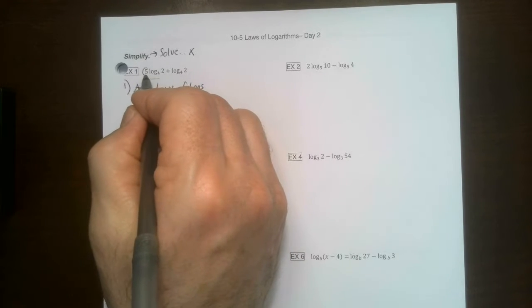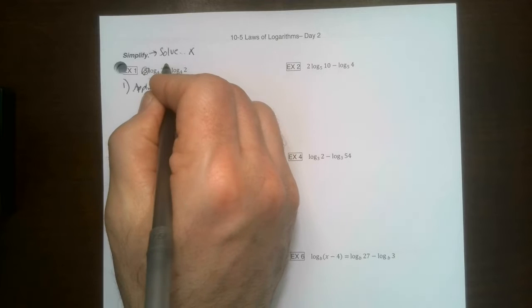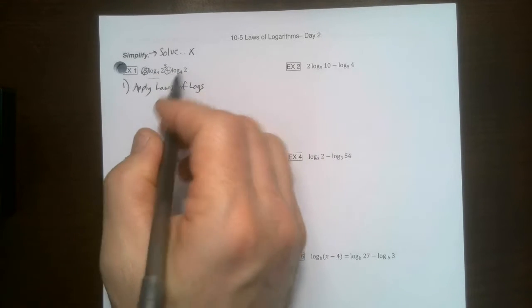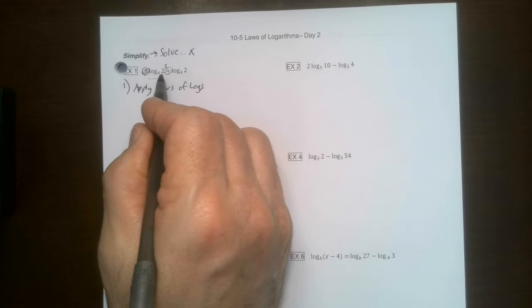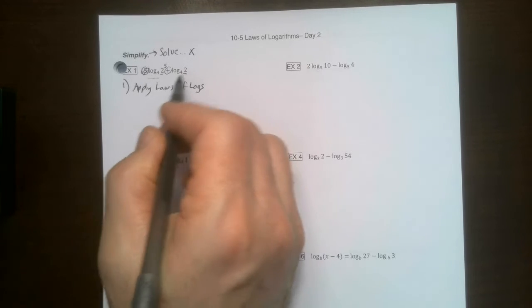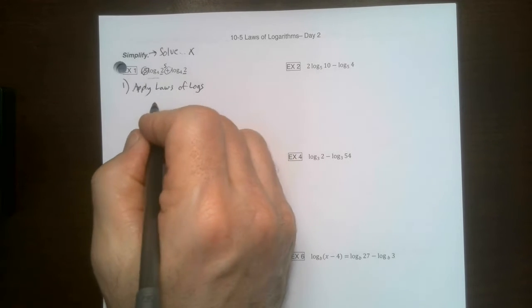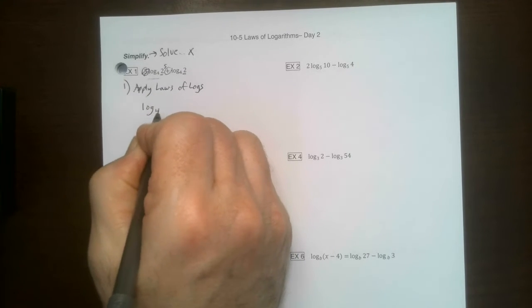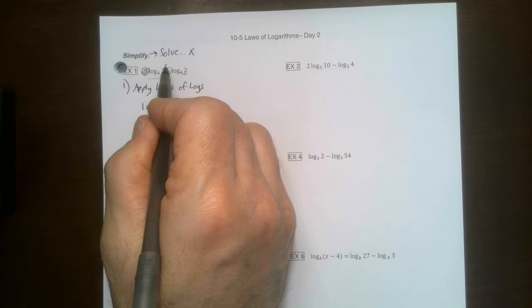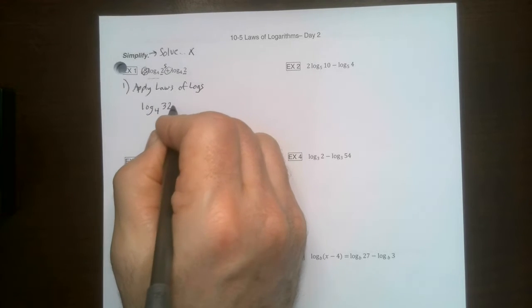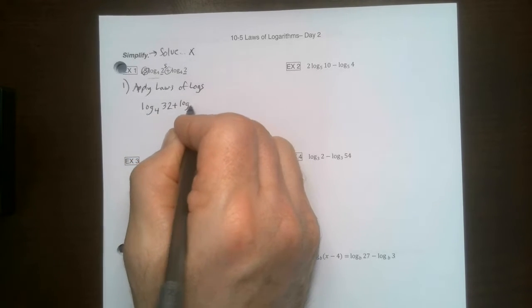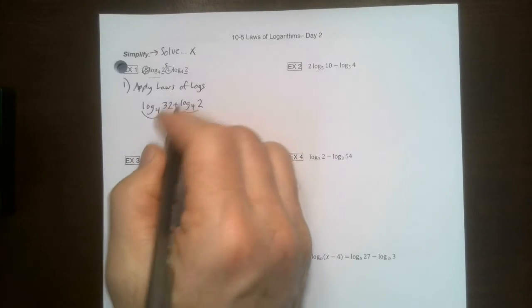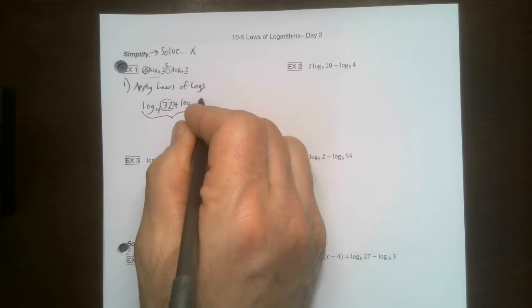So remember, this is the law of three. So we're going to take that and put it right there. And then what does addition mean? Addition means multiply whatever's in this spot by this spot. So these two logs actually turns into log base 4, 2 to the fifth is 32 plus log base 4, 2. And here it comes.